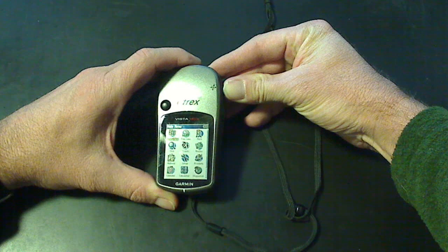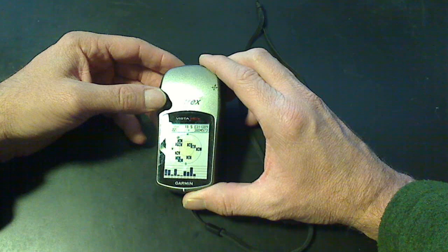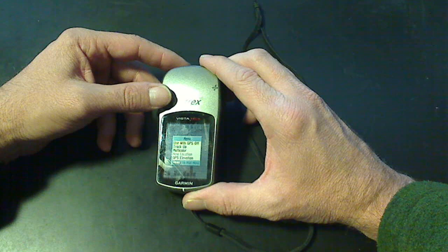So then we're back to satellite, the main menu. On the satellite page, you can quickly click in and see the strength of the satellites. You can track with the GPS off, you can track up.